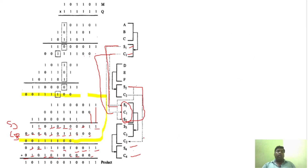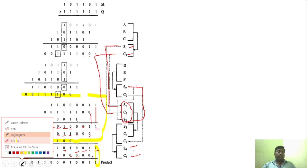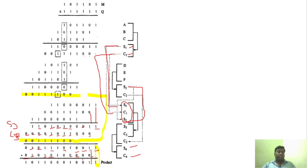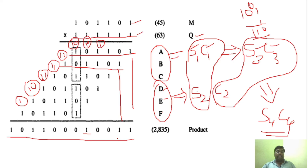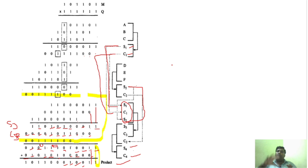With only two vectors S4 and C4 remaining, we perform normal addition using the carry lookahead adder. Adding S4 and C4 column by column with carry propagation gives us the final product. This final product is the same as what we obtained from normal multiplication, confirming the result. The last two vectors must always be added using carry lookahead adder — that is normal addition.